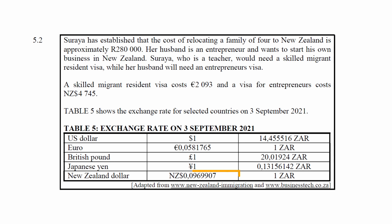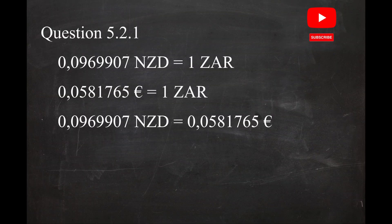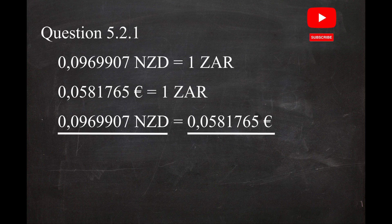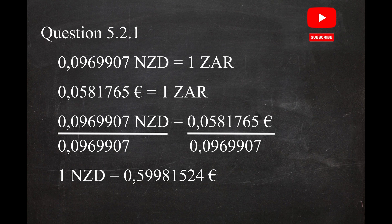From the table, 1 South African rand equals 0.0969907 New Zealand dollars, and 1 South African rand equals 0.0581765 euros. This means 0.0969907 New Zealand dollars equals 0.0581765 euros. Dividing both sides by 0.0969907 gives an exchange rate of 1 New Zealand dollar equals 0.59981524 euros.